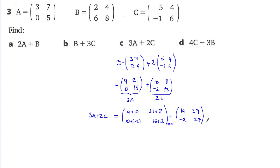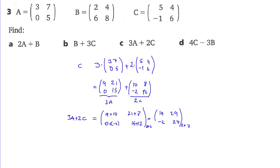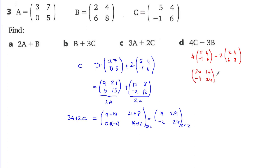The answer is the 2 by 2 matrix [19, 29; -2, 27]. Now in the second part, everything is the same but we subtract. I'm going to find 4C minus 3B. Writing 4C: 4 times [5, 4; -1, 6]. Distributing: 4 times 5 is 20, 4 times 4 is 16, 4 times -1 is -4, 4 times 6 is 24.